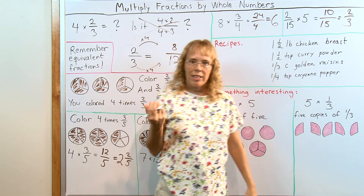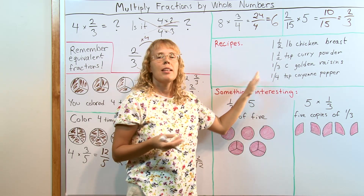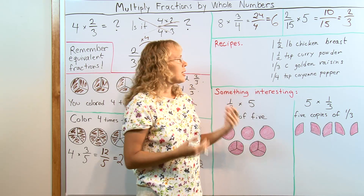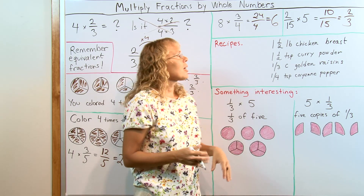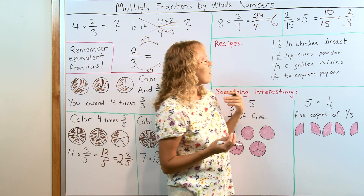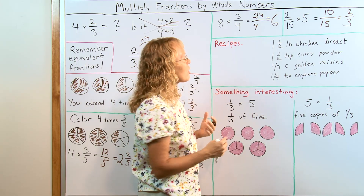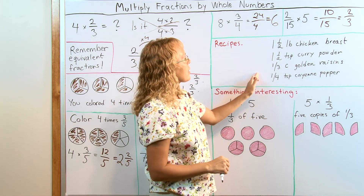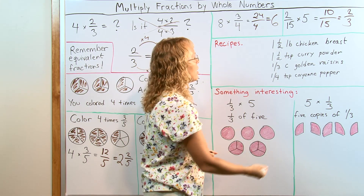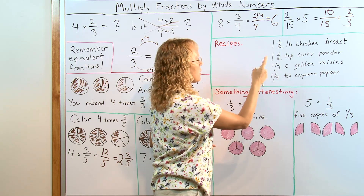Working with recipes is a nice application of this topic. You have a recipe and ask students to make a double batch, triple batch, or whatever. This is part of the list of ingredients for curry chicken — it has other ingredients too, but they are whole numbers like 1 onion. Let's say we need to make it 3 times. So we need to think: 3 times this, 3 times this, 3 times this, 3 times this, 3 times this.